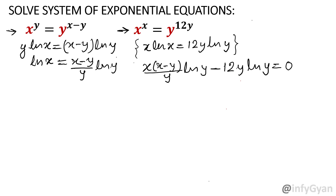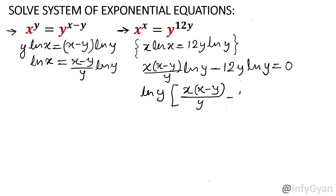To summarize what was done: we took ln of both sides for both equations, calculated ln x from equation 1, and substituted into equation 2. The resulting equation is: x·(x − y)/y · ln y − 12y·ln y = 0. Now take ln y as a common factor. Inside the bracket we are left with x·(x − y)/y − 12y = 0.